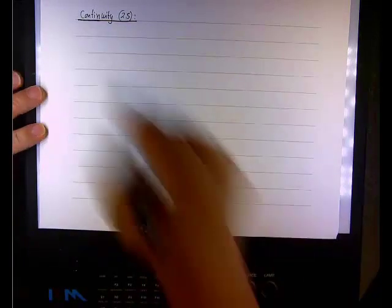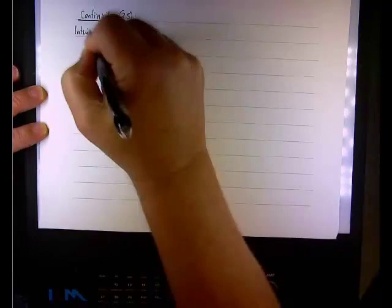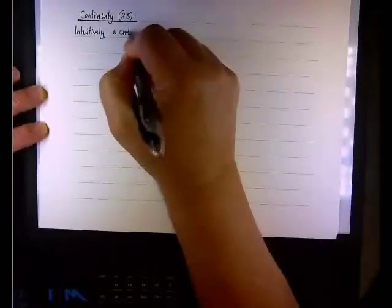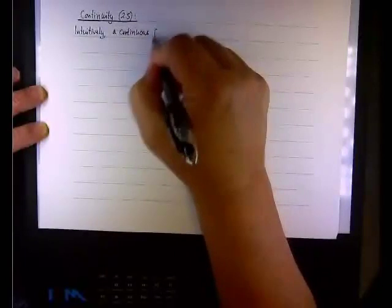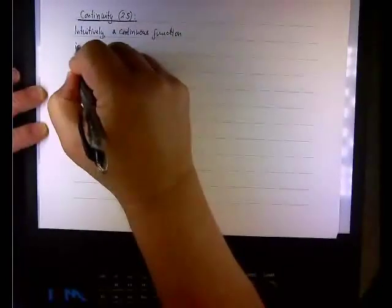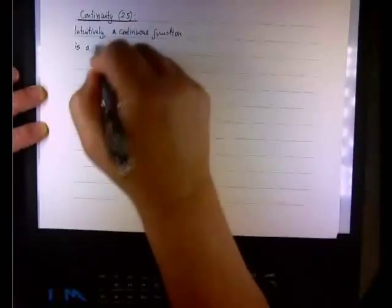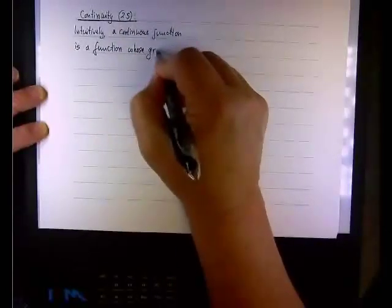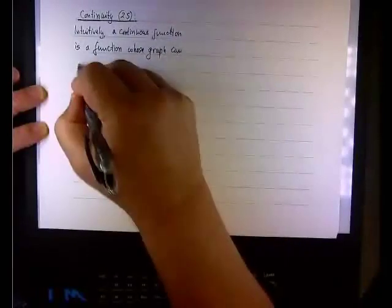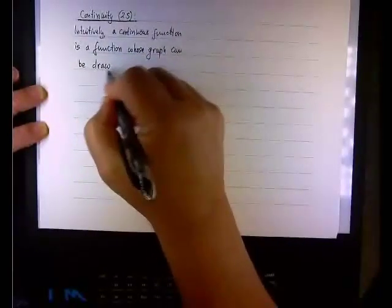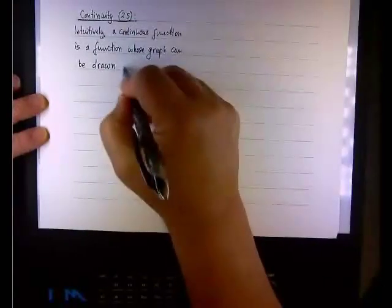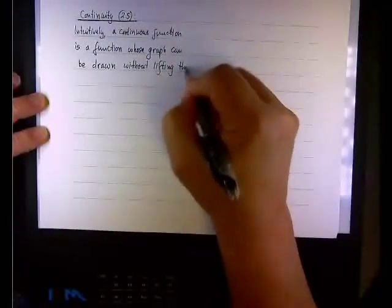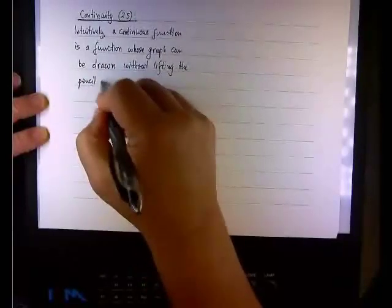So as I said, intuitively, let me see if I spell it correctly, a continuous function is a function whose graph can be drawn, I think, that's drawn, D-R-A-W-N